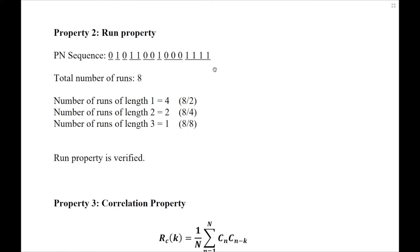After identifying the different runs, let us calculate the total number of runs available in the sequence. Counting them: 1, 2, 3, 4, 5, 6, 7, 8 — the total number of runs is 8. Coming to the run property: among the total number of runs, one half of the runs will be of length 1, one fourth of length 2, one eighth of length 3, one sixteenth of length 4, and so on. Let us verify. The number of runs of length 1 is 4, which equals half of 8. Therefore, this condition is correct.